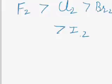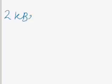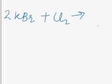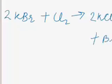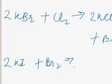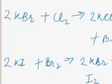Let us discuss examples in which a non-metal displaces another non-metal. Potassium bromide (KBr) reacts with chlorine to give potassium chloride and bromine — in this reaction chlorine gas displaces bromine from KBr. In another example, potassium iodide (KI) reacts with bromine to give potassium bromide plus iodine — in this reaction bromine gas displaces iodine from KI.